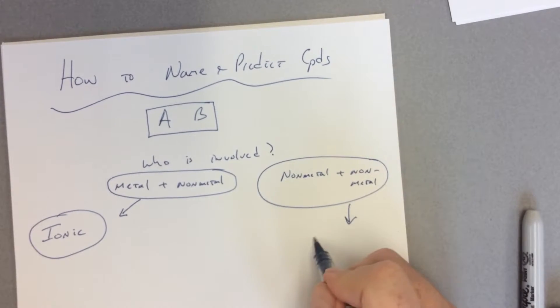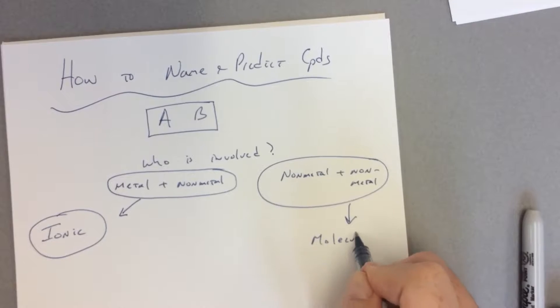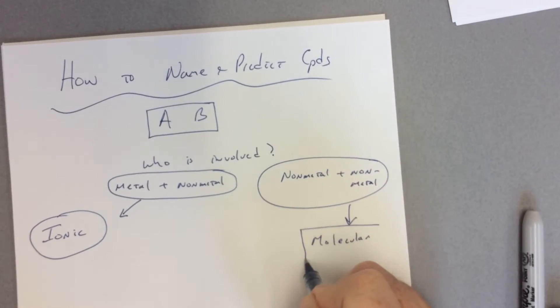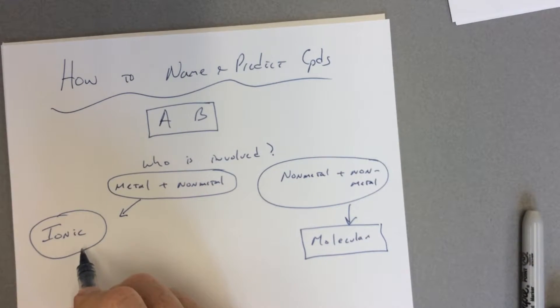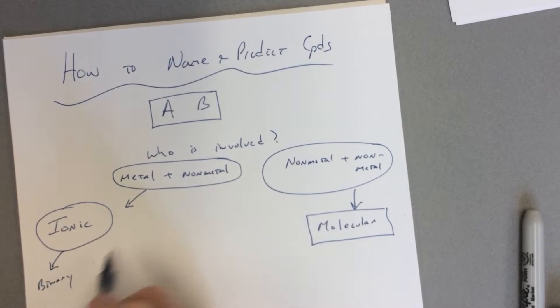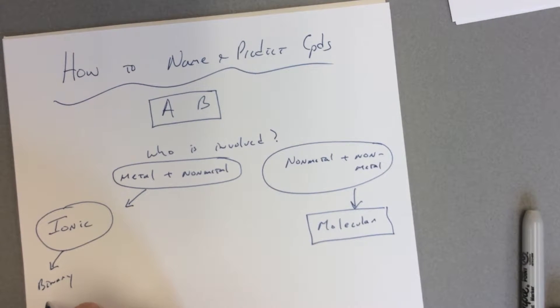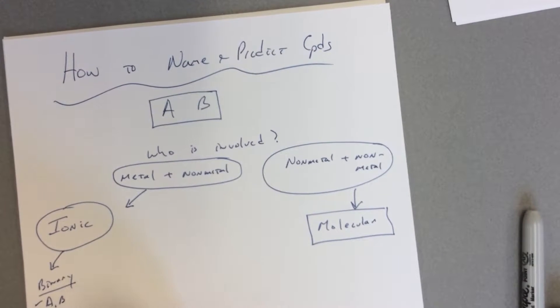If it's ionic, we have to identify if we see that it's binary. Binary means there's just two parts. In this case, it looks like it's binary. Well, this generic, whatever it is, AB is an example of something being binary. If it was ABO, that would be tertiary—there'd be three parts.